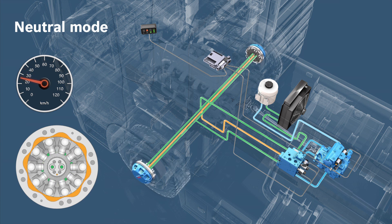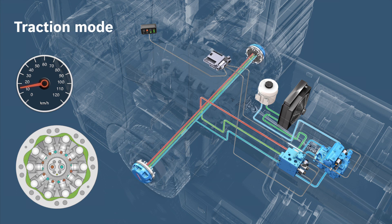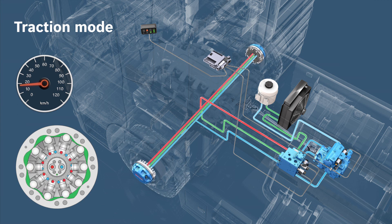If the driver does not disable HTA by pressing the button, the system automatically switches back to traction mode at a vehicle speed below 20 km per hour.